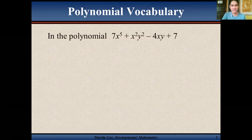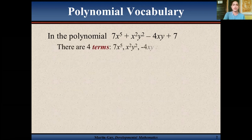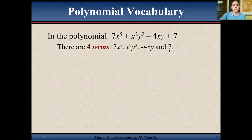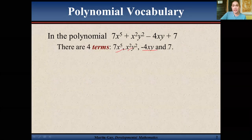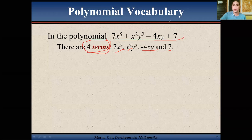In the polynomial 7x to the power of 5 plus x²y² minus 4xy plus 7, as you can see on the screen, there are four terms: 7x⁵, x²y², negative 4xy, and 7. These are the four terms in our given polynomial.